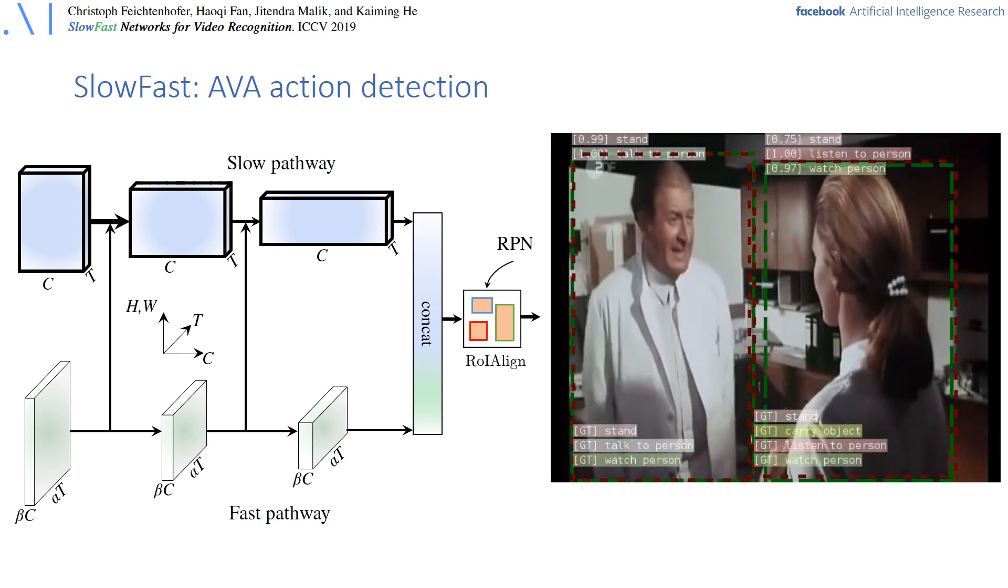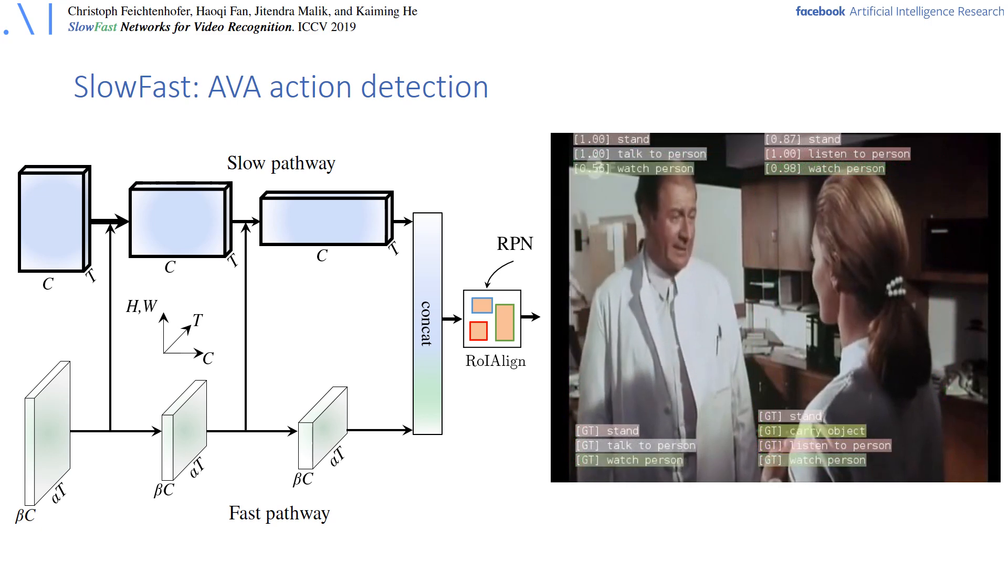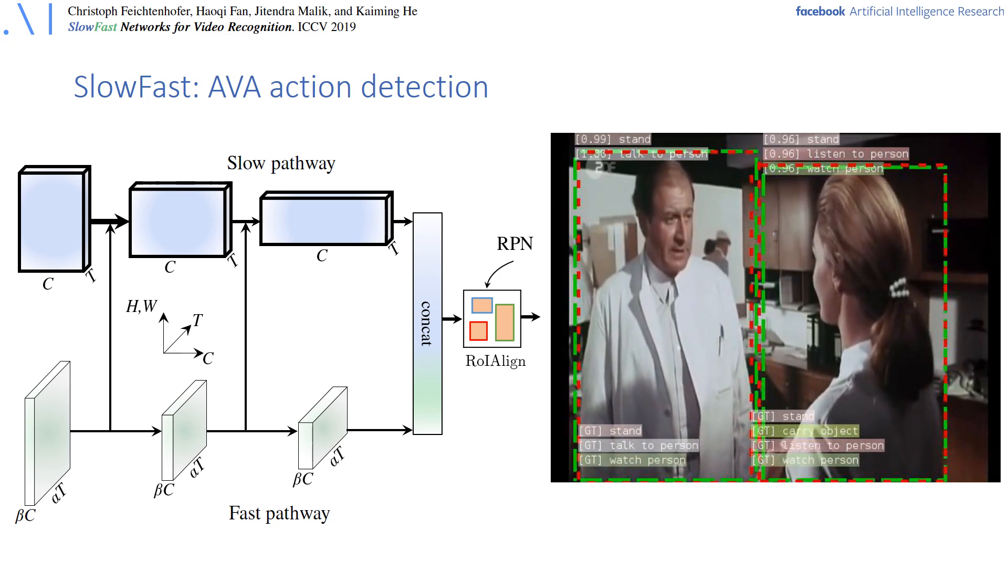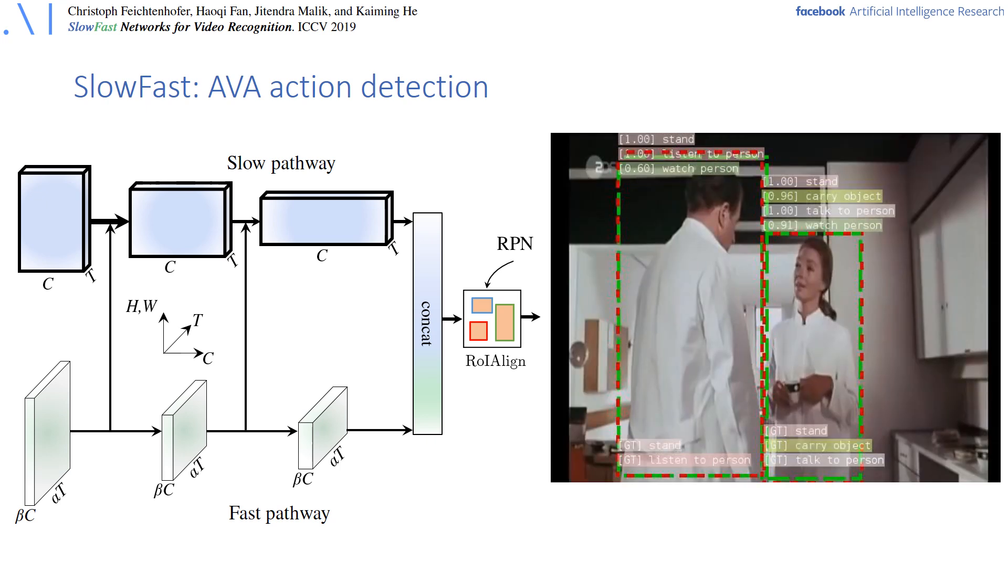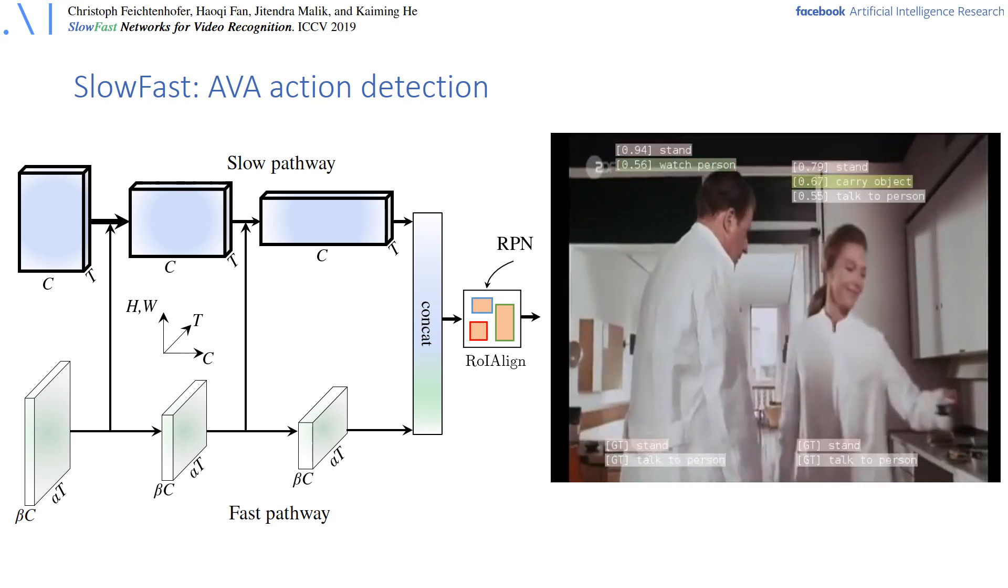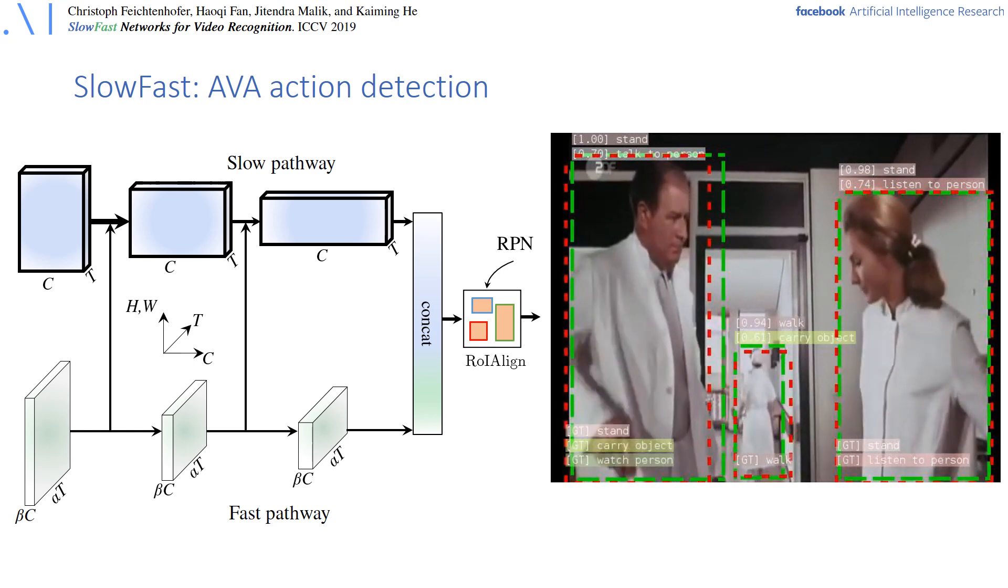Our detector is similar to a Faster R-CNN applied to video to get these detections. Detected boxes we show in green and ground truth boxes in red. Our action detections are shown on top of the people with the confidence scores, while the ground truth labels are on the bottom. The video illustrates the difficulty of this task, as multiple actions have to be localized in both space and time.